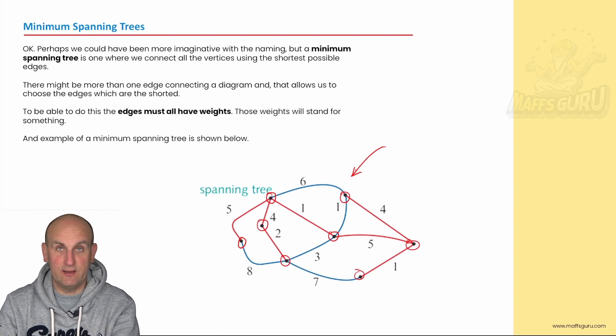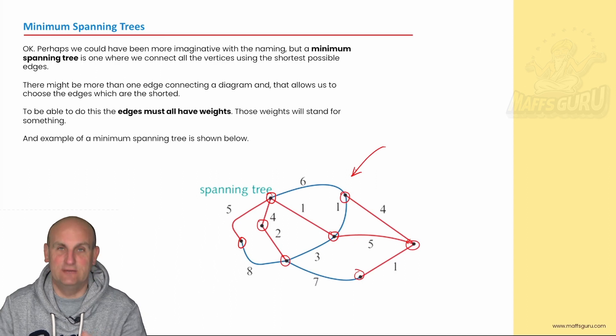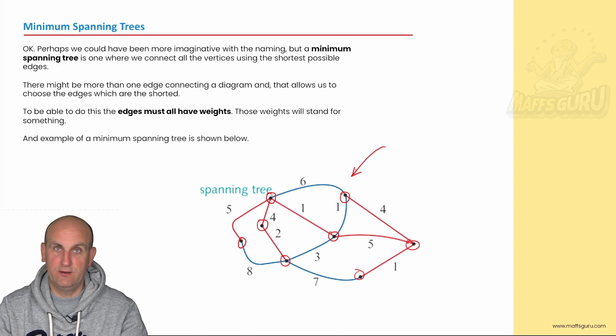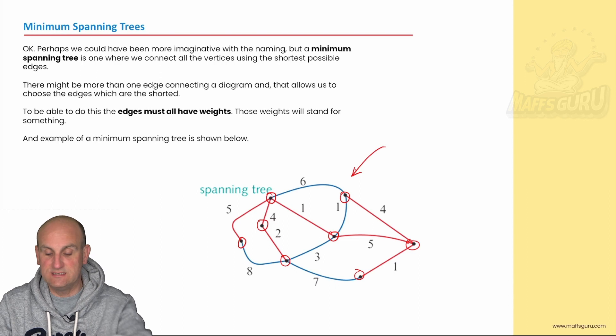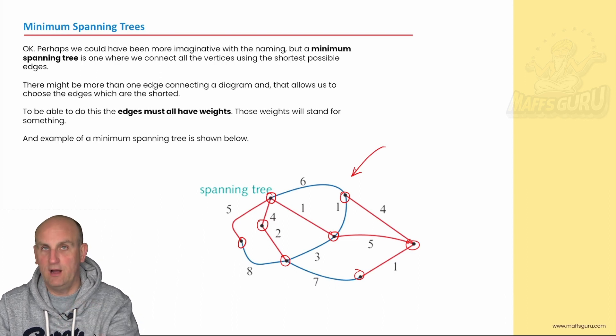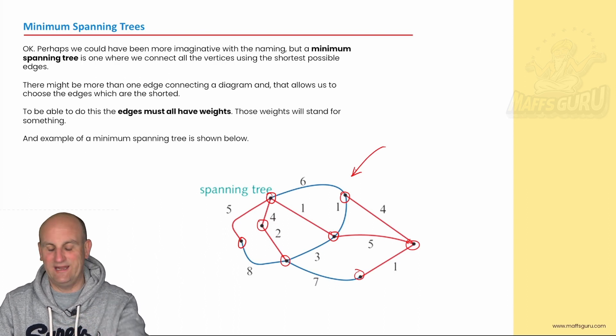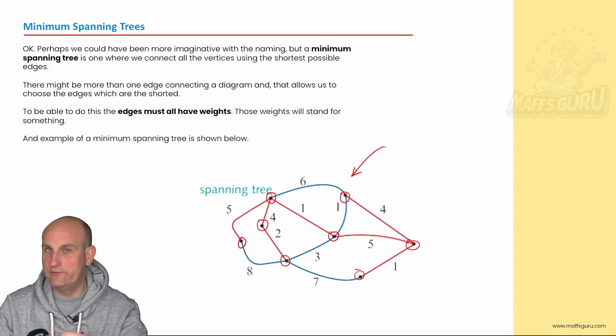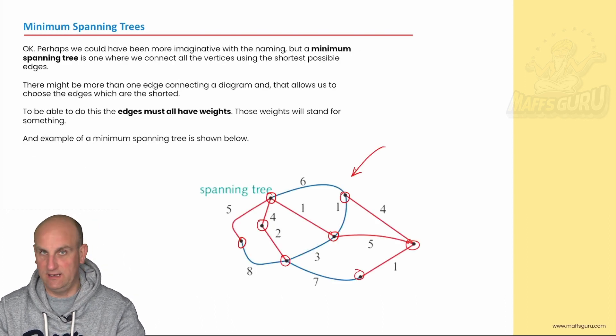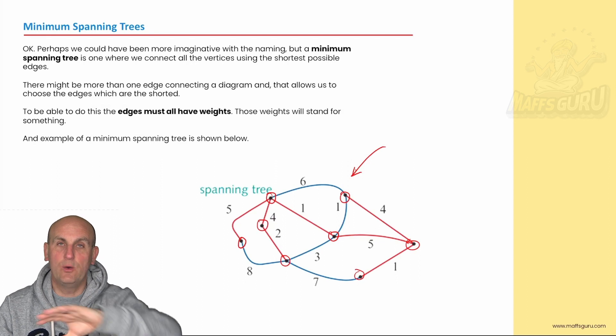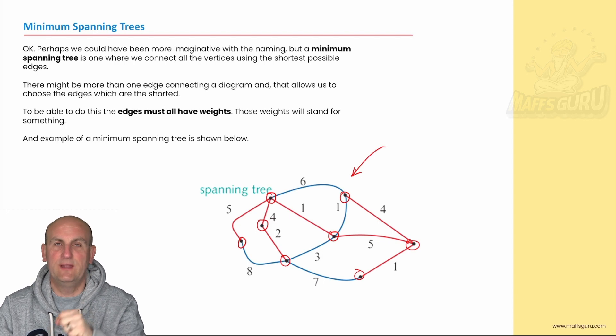Now, interestingly, for diagrams, and I've said interestingly, knowing forward that this is the least interesting thing, interestingly, there are lots of ways of drawing spanning trees from diagrams. Lots. And that's not the only one. If I was to take this out and turn it away and do another one, there are other ones that can happen. So long as you are connecting the vertices with the lines, and always one edge less, yes? But what we're leading to is actually something called a minimum spanning tree, he says going forward and then coming back.